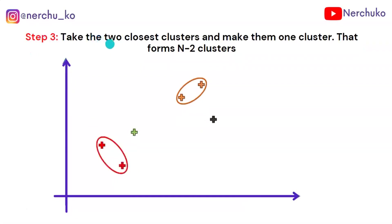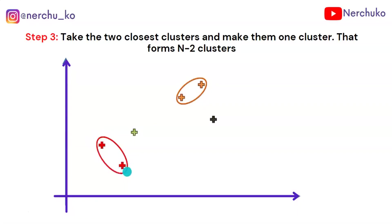Step 3: take the two closest clusters and make them one cluster. That forms n-2 clusters. We start from n-1 clusters, check the two closest, merge them into one, and finally have n-2 clusters.